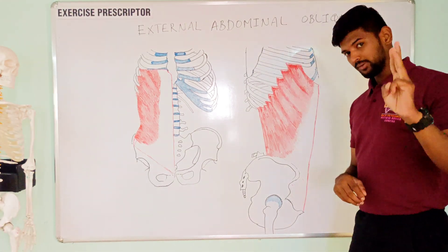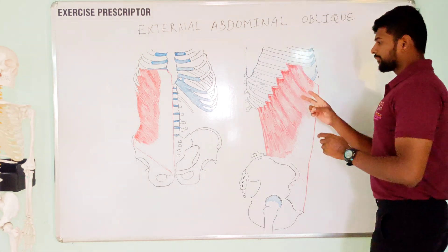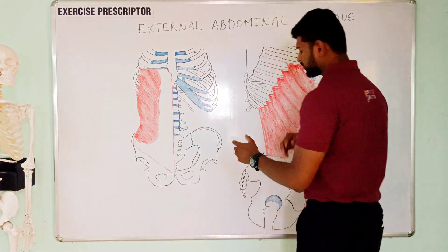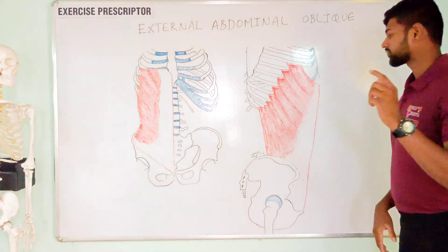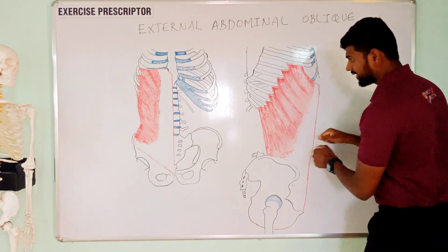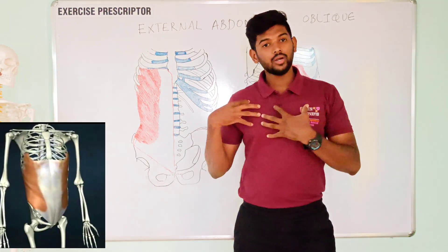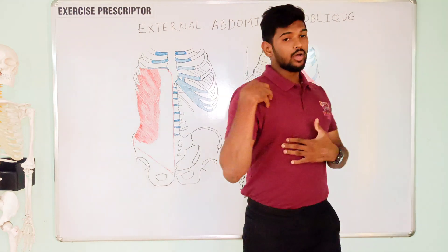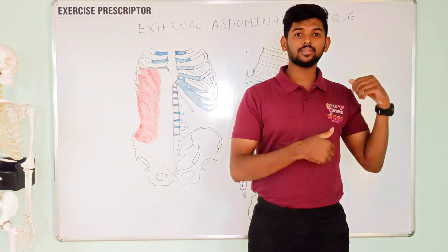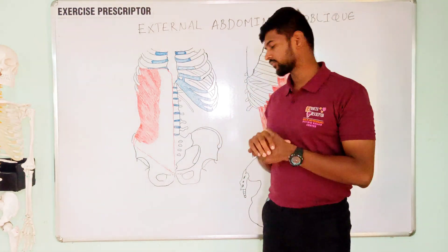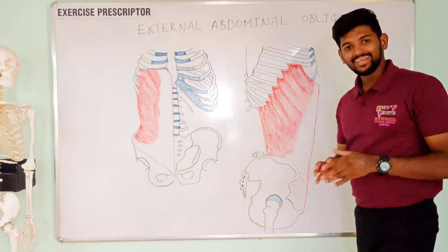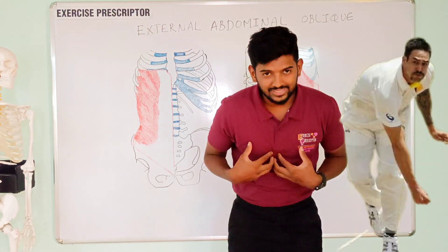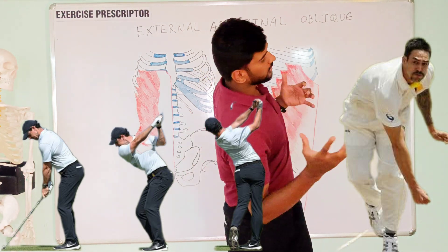The third important movement: both direction fibers are oriented in a completely oblique direction — that is why this muscle is called abdominal oblique. If this muscle pulls in this way, it creates the movement of contralateral rotation of the trunk. If this side muscle contracts, it creates rotation to the opposite side. So finally, if the external abdominal oblique muscle contracts, it produces the combined movement of flexion, lateral flexion, and contralateral rotation of the trunk.